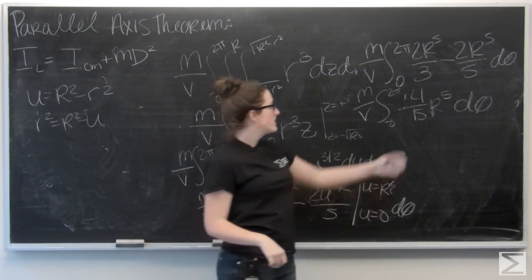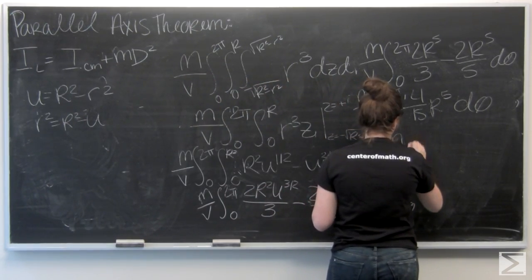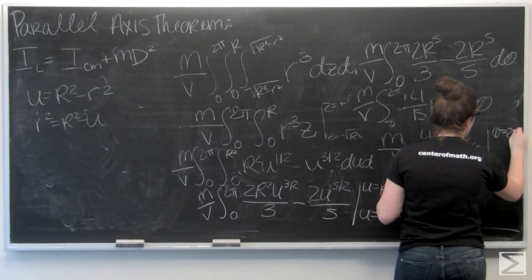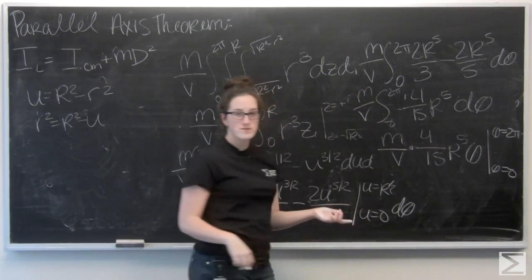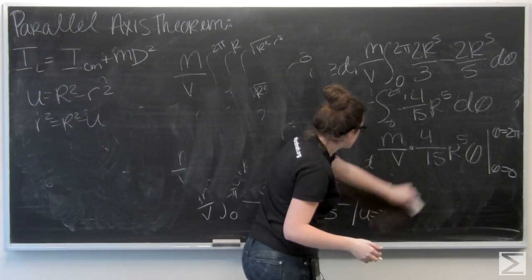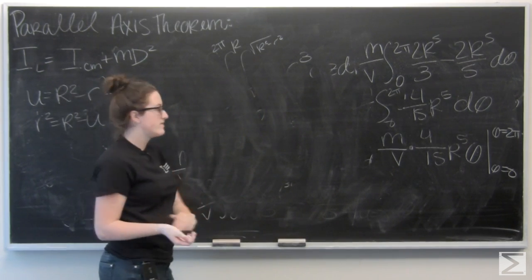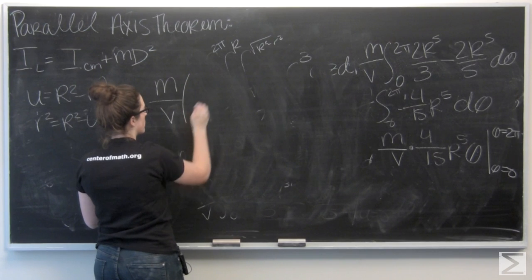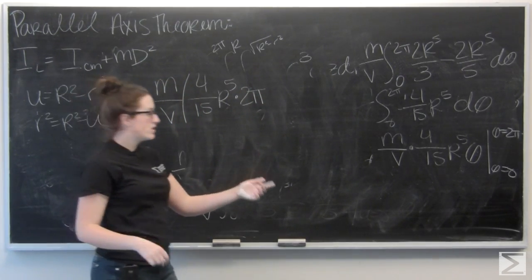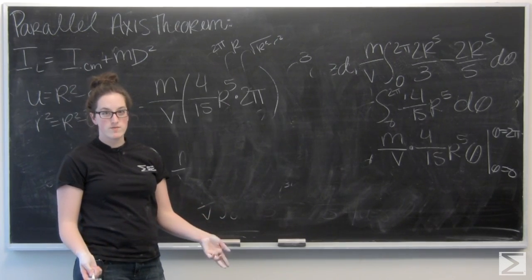Now let's go ahead and integrate with respect to theta. This whole term is a constant, so when I integrate I'm going to get (4/15) R⁵ · θ. Evaluating from θ = 0 to θ = 2π: plugging in 2π first, and then when I plug in θ = 0 the second term drops out. So I have (4/15) R⁵ · 2π.